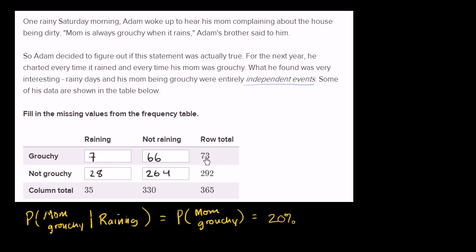And our best estimate of the probability of his mom being grouchy on the total days is 20%. And so if the data is backing up that it's independent events, then the best way to fill this out would be the probability of his mom being grouchy on a rainy day or a not rainy day should be the same. And that's what we've filled out right over here.